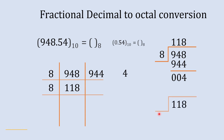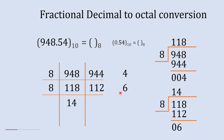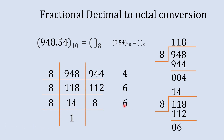We divide 118 by 8: 14 eights are 112, and the remainder is 6. So we write 14 as the quotient and 6 as the remainder. Then we divide 14 by 8: 8 ones are 8, so 14 minus 8 gives remainder 6 and quotient 1. Now if you try to divide 1 by 8, you can no longer divide further, so we write 1 here.